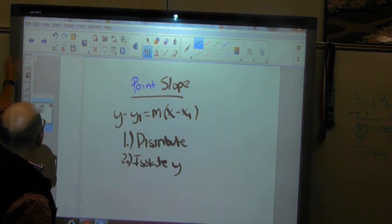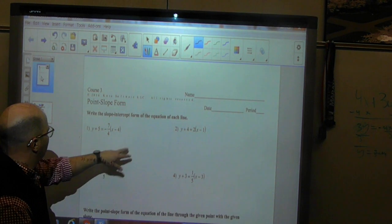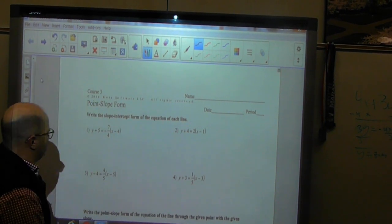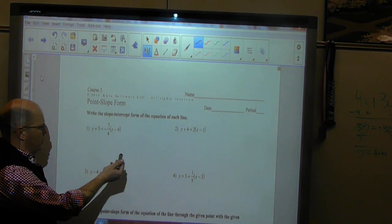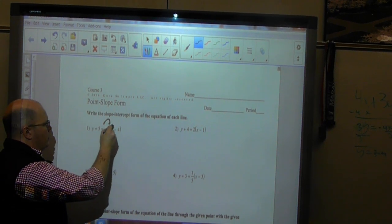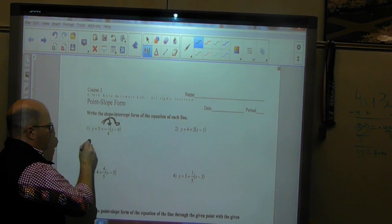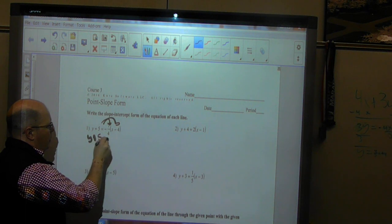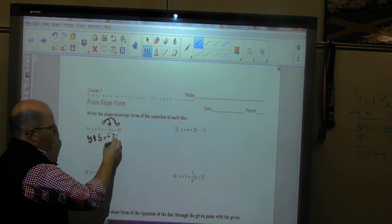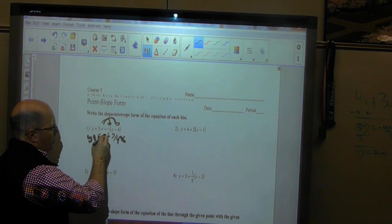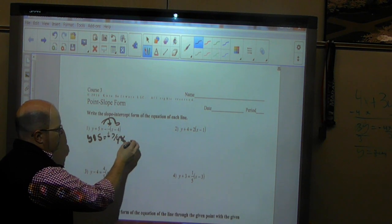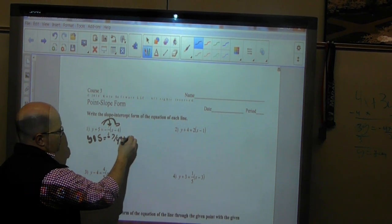So when we're looking at problems to solve, let's take a look at number one on this worksheet. Everything's plugged into point slope for you, so we're just going to distribute. So now I'm left with y plus 5 is equal to negative 7 over 4x. Negative 7 fourths times negative 4 is positive 7.